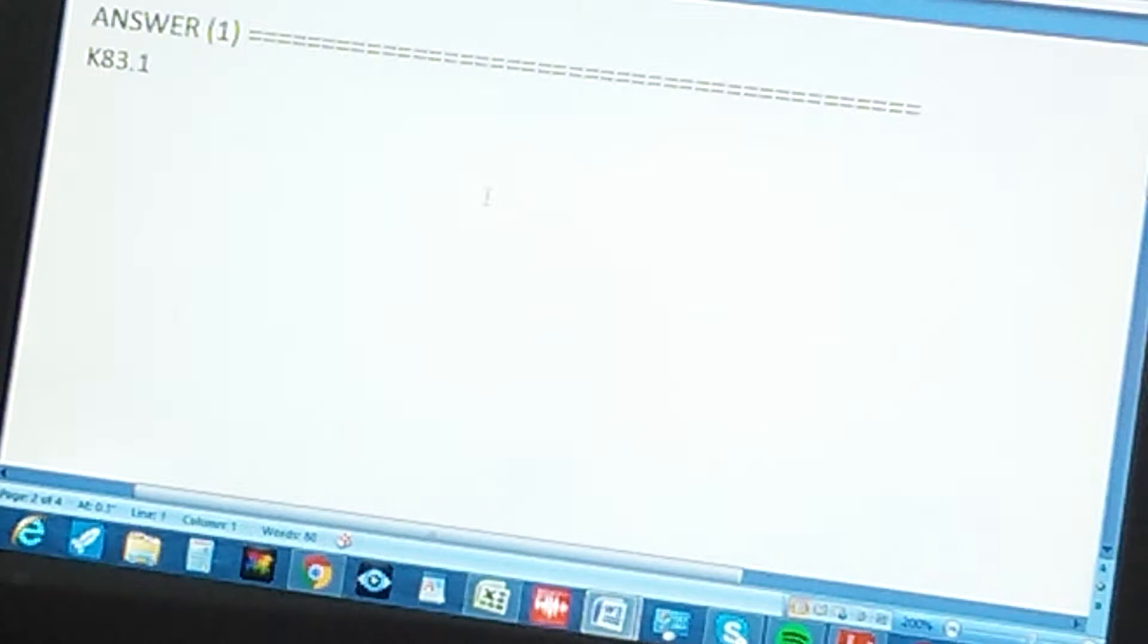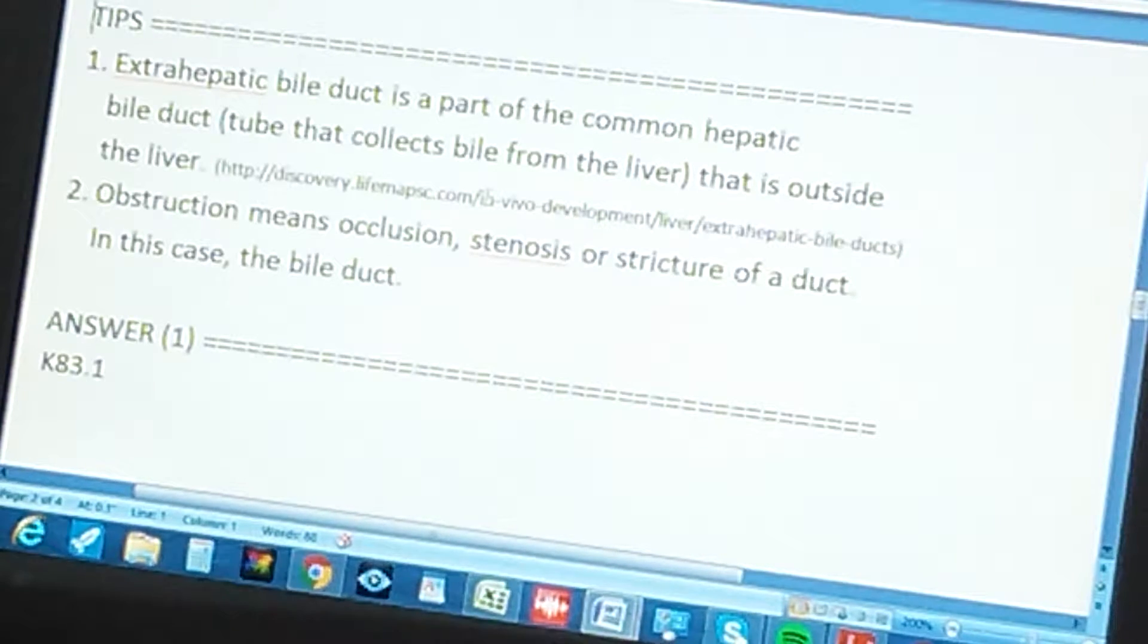Okay, the first tip: extrahepatic bile duct is a part of the common hepatic bile duct tube that collects bile from the liver that is outside the liver. Just a little anatomy here.